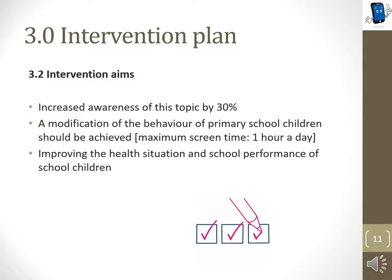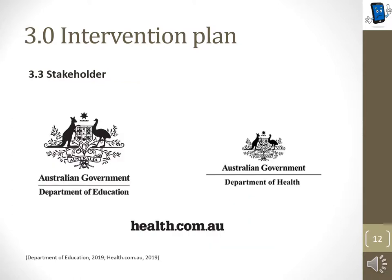One major aim is to inform about the use of smartphones. As many school children don't realise the negative consequences of high screen time, this topic will be particularly addressed. Children will identify a good use of smartphones. The awareness of the children should be improved and increased by 30% within the first year of the subject. A further objective is to encourage school children to modify their behaviour, so the screen time should be reduced by up to one hour a day. Through this understanding, it is possible to initiate an effective and long-term voluntary behaviour change, reducing health problems and improving school performance.